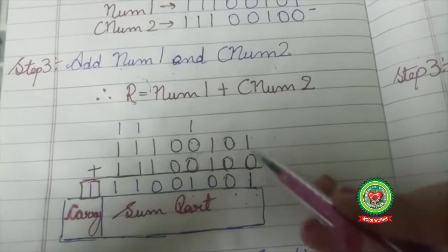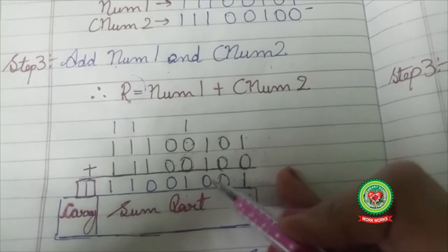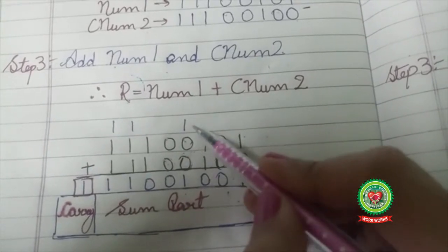1 plus 0, 1. 0 plus 0, 0. 1 plus 1 is 10. 0 as the base. 1 as the carry.